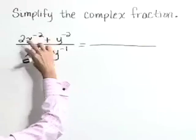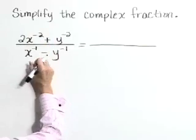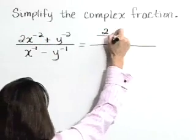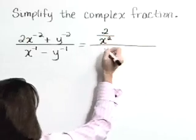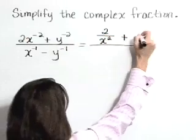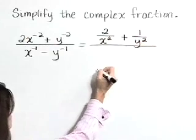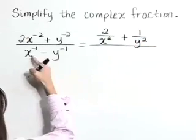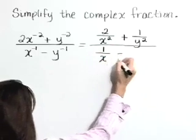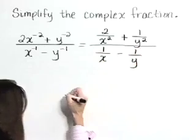Remember that a negative exponent is going to flip that value into its denominator. So this first term in the numerator, write as 2 over x squared. Our second term in the numerator is 1 over y squared. Down to the denominator, x to the negative 1 is 1 over x, minus y to the negative 1, which is 1 over y.